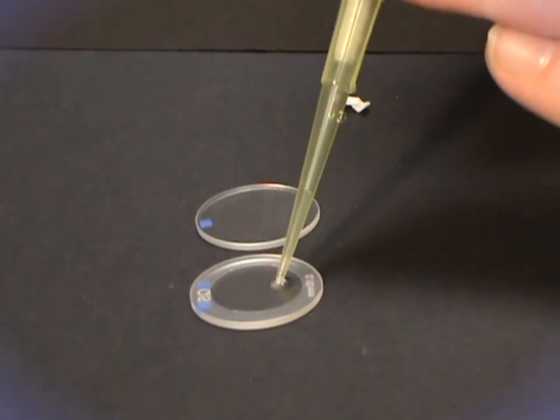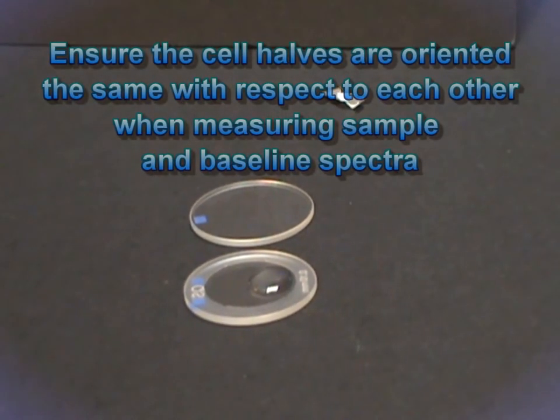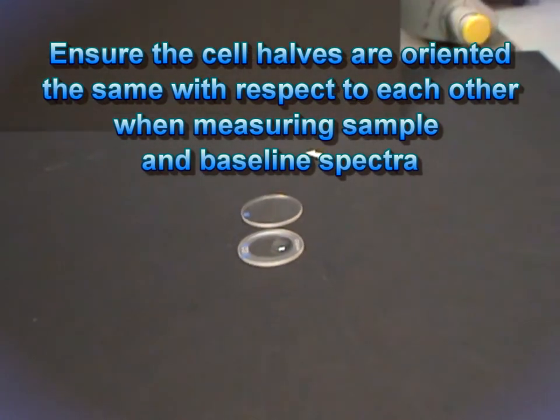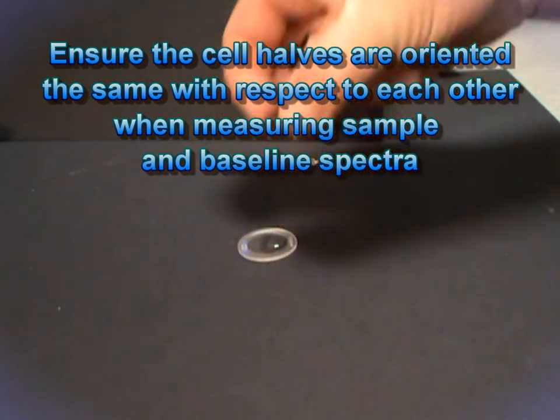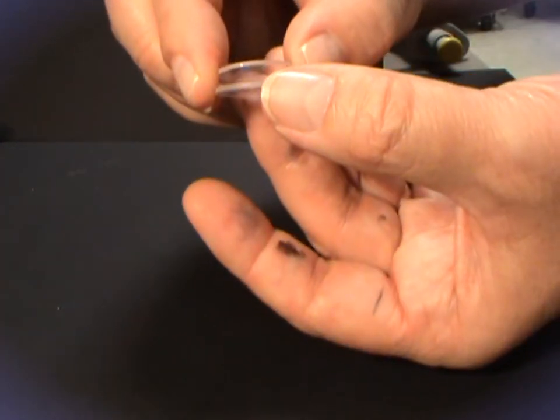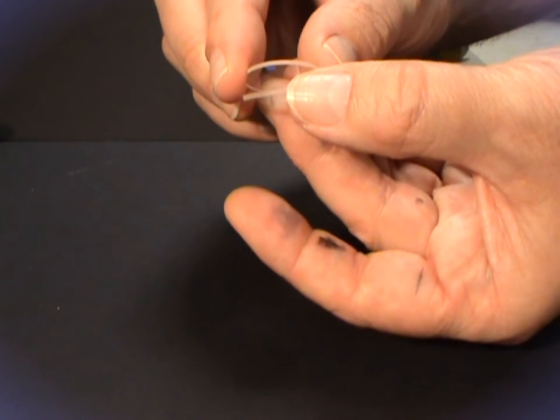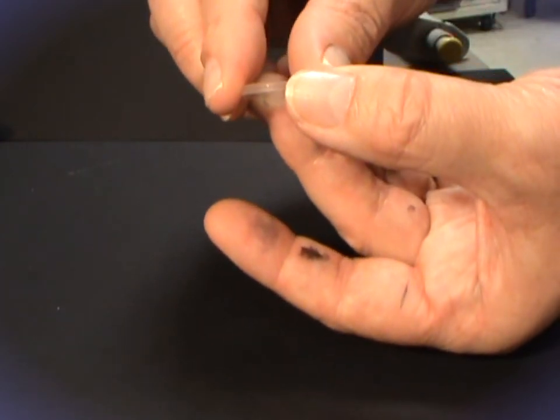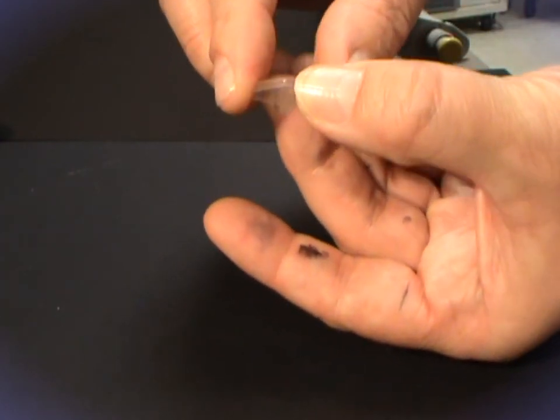Use reference marks on the cell halves to align them the same way each time the cell is assembled. This will ensure that any dichroism intrinsic to the cell is subtracted with the baseline. Find your own way of assembling the cell. I prefer to bring the edges together on one side and then lower the lid as if it were hinged.